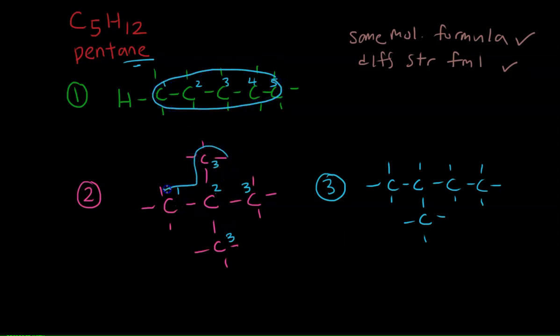What about this? One, two, three. If I go up this way, this is also three. One, two, three. One, two, three. This is only three straight carbons. If I draw it like that, I think it will be clearer. This is only three.